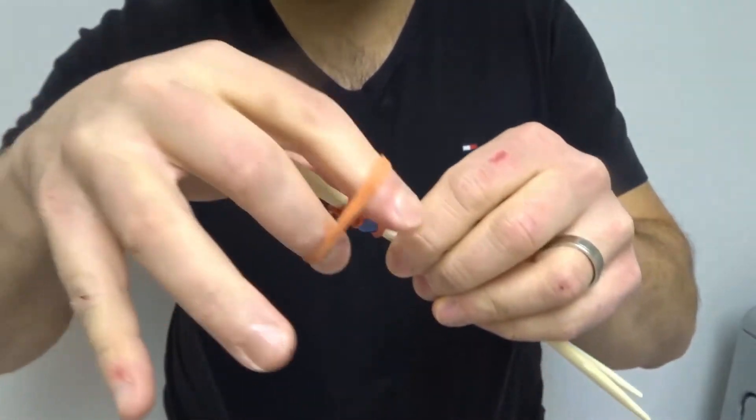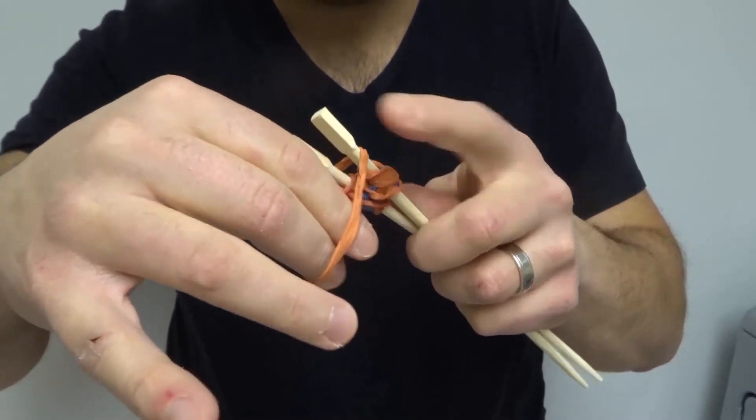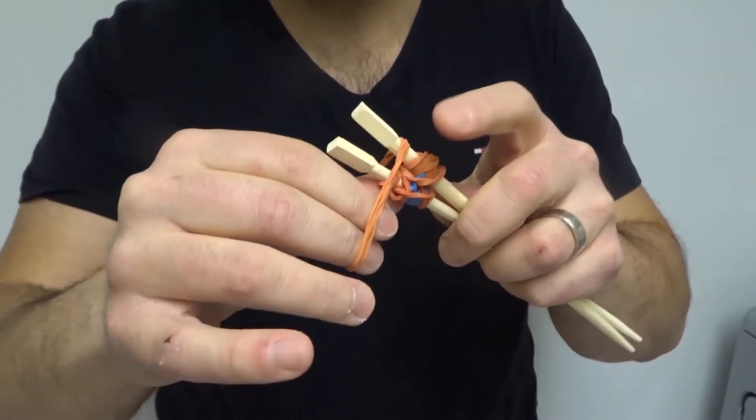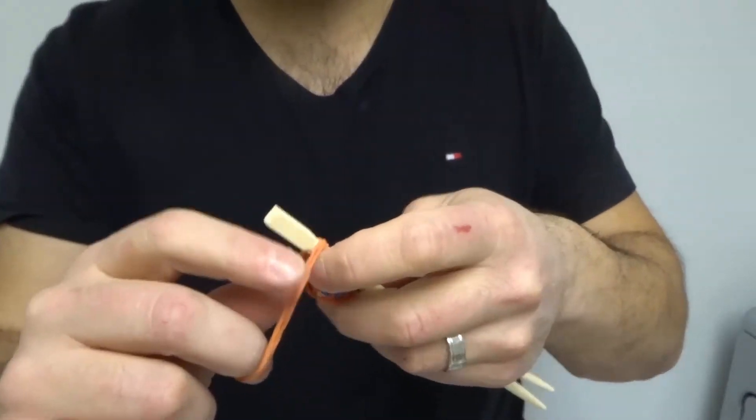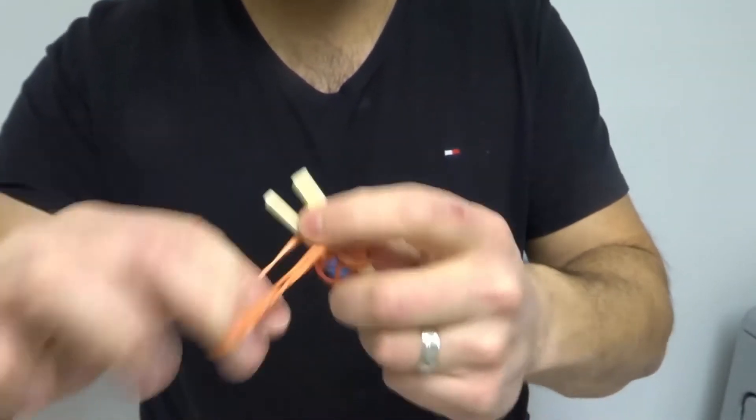I said around the rubber bands, but I misspoke right there. You want it around the top, above the other rubber bands. This is gonna pull the tops of the chopsticks together.